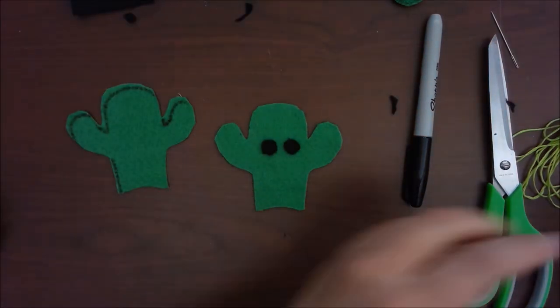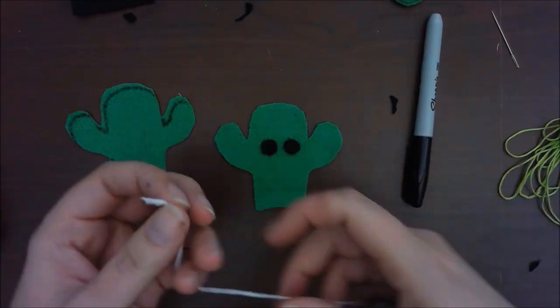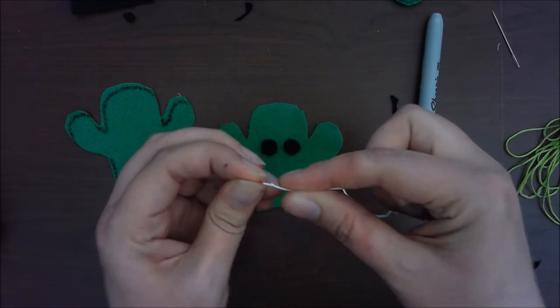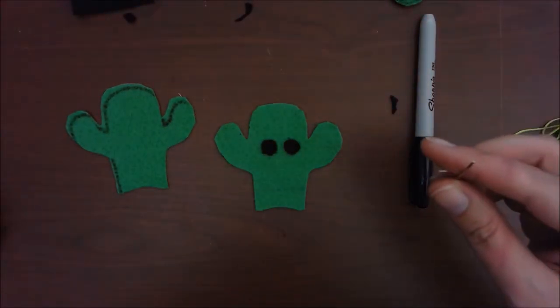Now that we've got our eyes cut out, we are ready to sew them on. So grab your white thread, go ahead and put a knot in the bottom, and we're going to thread our needle.